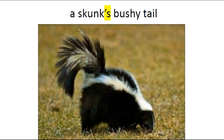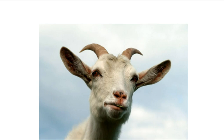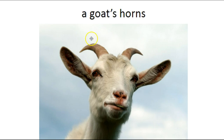You already know how to make a singular noun possessive. You add apostrophe-s after the base word, like here, where it says 'a skunk's bushy tail.' We have the goat and the horns that belong to the goat, so we could say 'the goat's horns.' We need to include an apostrophe there. We have one goat, a singular goat — the goat's horns. We would write it like this: a goat's horns, which means that these horns belong to the goat. This apostrophe-s tells us that the object belongs to the one who possesses it — a goat's horns.